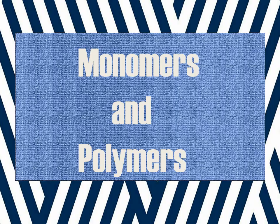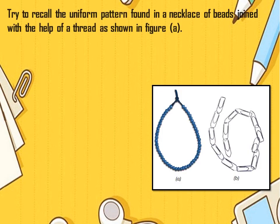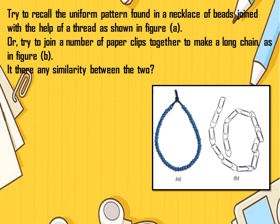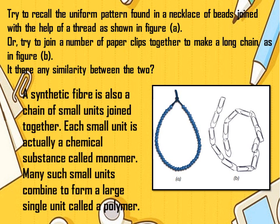Let us study about monomers and polymers. Try to recall the uniform pattern found in a necklace of beads joined with a thread, as shown in figure A, or try to join a number of paper clips together to make a long chain, as in figure B. A synthetic fiber is also a chain of small units joined together. Each small unit is actually a chemical substance called a monomer. Many such small units combine to form a large single unit called a polymer.